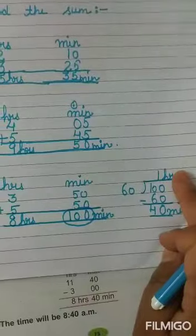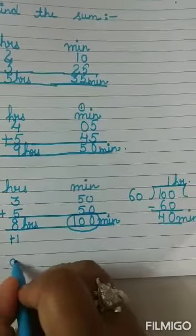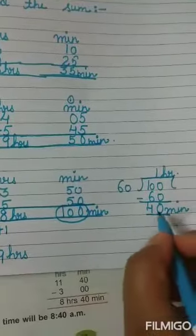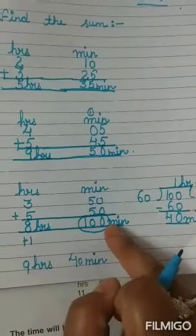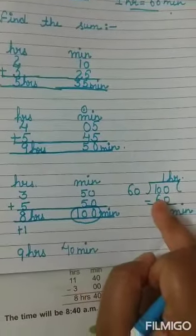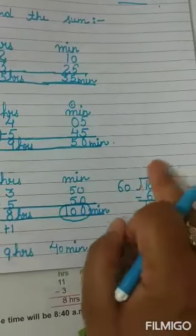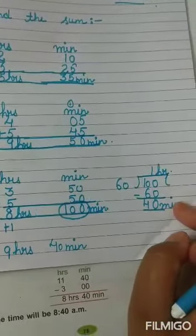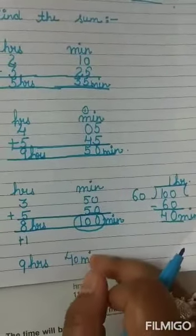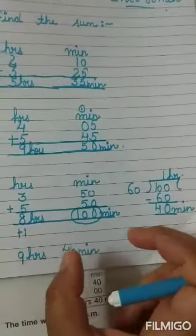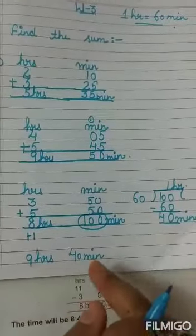अब इसमें 1 hour जो है, वो 8 hours में add हो जाएगा, तो 8 hours बन गए 9 hours, और minutes कितने रहे — 40 minutes। So the answer is 9 hours 40 minutes. तो जब 60 या more than 60 होगा, तो आपने उसे break कर देना है by dividing the number with 60। जो quotient होगा वो hours होंगे, और जो remainder रहेगा वो minutes होंगे। Quotient को hours में add कर देंगे, और minutes as it is आ जाएंगे।